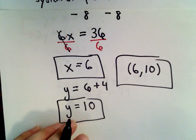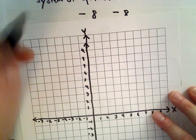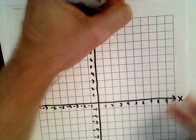So that's where we're going to put a dot on our graph. 6 comma 10.